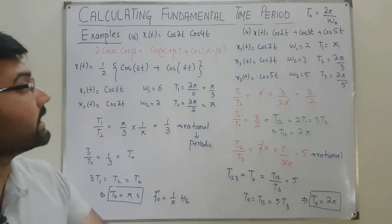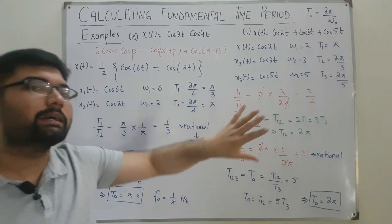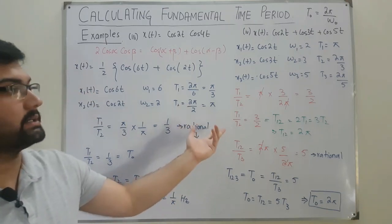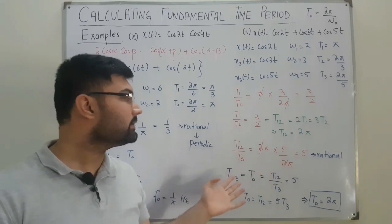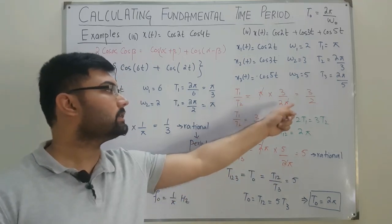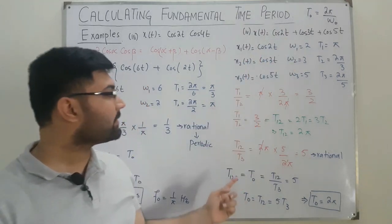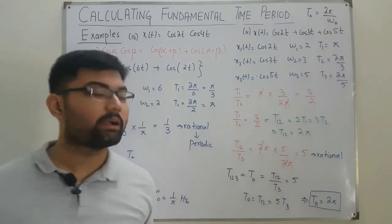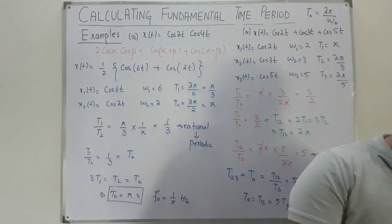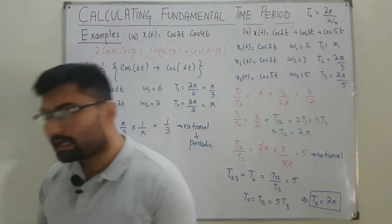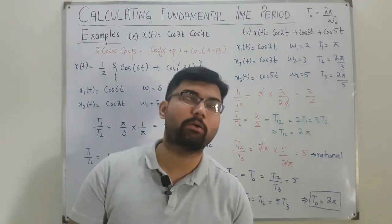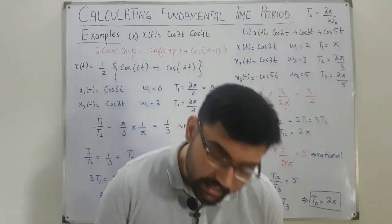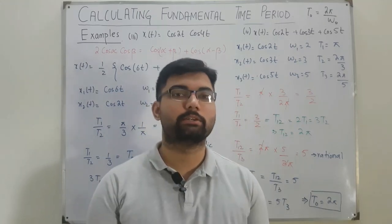To summarize: with three components, find each period individually, then take any two and find their combined period by computing the ratio. Then combine that result with the third component. This gives the overall period of the signal. That's all for periodic and aperiodic signals. In the next lecture we'll continue — take care, remember me in your prayers, and subscribe to the YouTube channel. Goodbye.